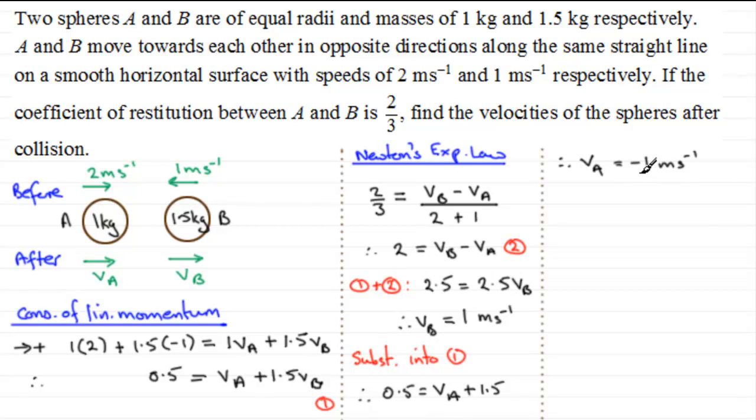So what is this telling me? Well, it's telling me that, because it's negative, that the speed of A will be 1 metre per second, but it's going to be in the opposite sense to what I've got here. So we know that it's reverse direction. So what we can say is, therefore, A reverses direction.